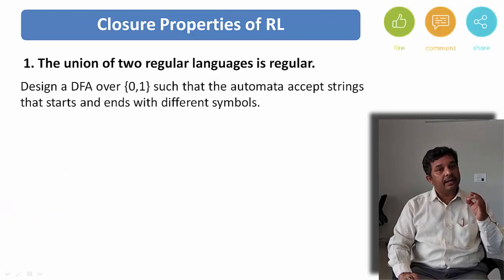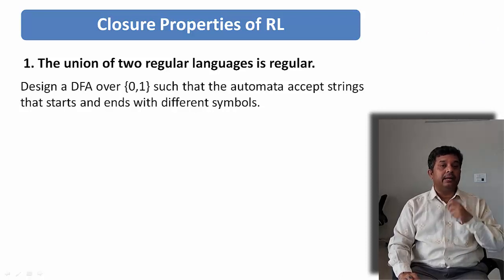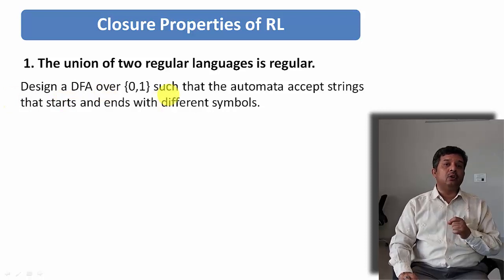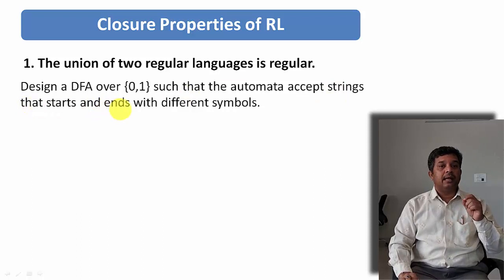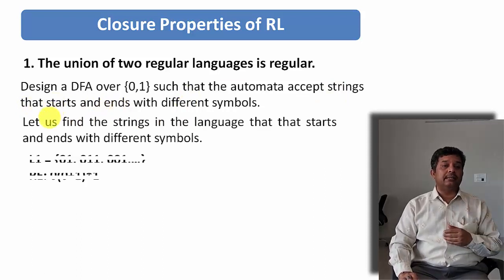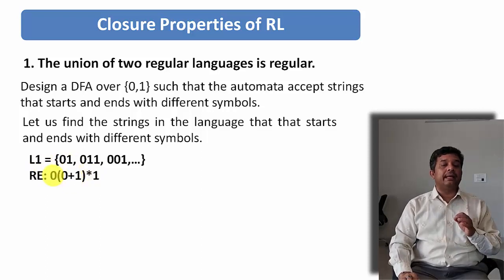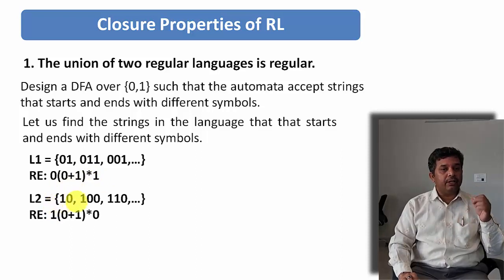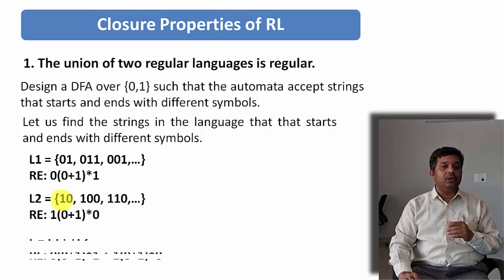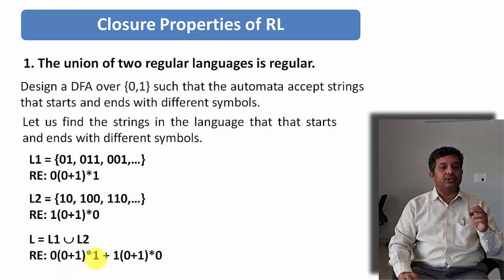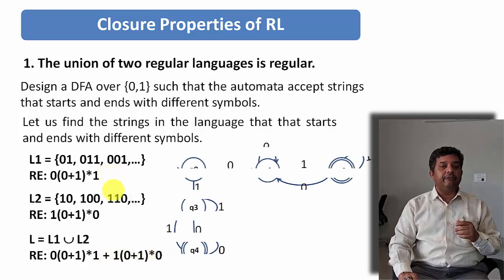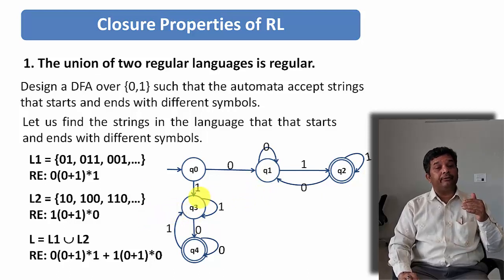We know that DFA recognizes regular languages. Let us try to generate a regular language with a DFA. Design a DFA over {0, 1} such that the automata accepts a string that starts and ends with a different symbol. The language starting with 0 and ending with 1 has regular expression: 0(0+1)*1. Similarly, starting with 1 and ending with 0 gives: 1(0+1)*0. Taking the union of these two, we get the combined regular expression, and the DFA for this is shown. I hope you understood how we perform the union operation and obtain a regular language.